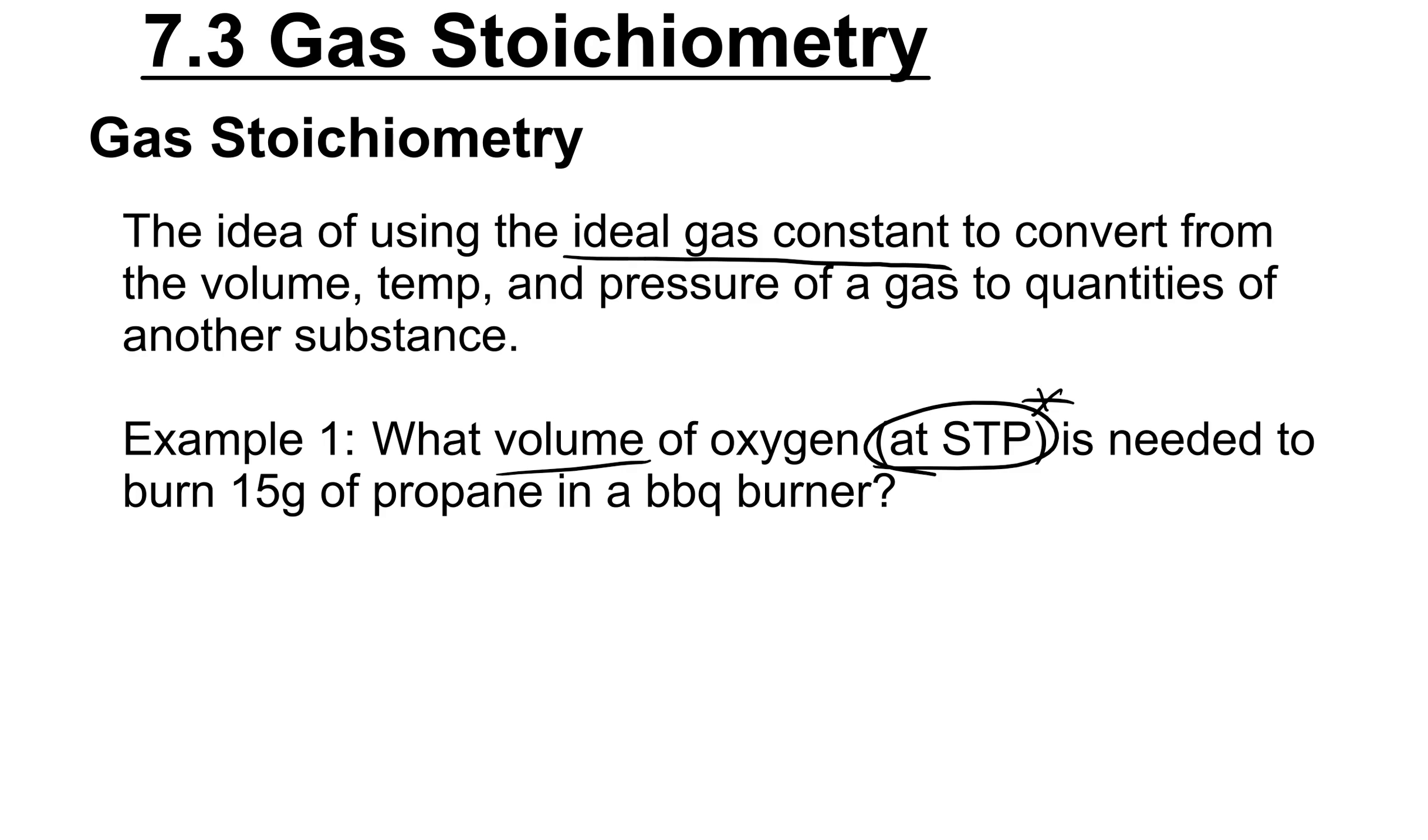Okay, so we've got oxygen reacting with propane. As we always do, we start off with a balanced chemical reaction in stoichiometry. Let's try that out. So we're going to have propane reacting with oxygen, and it's going to produce, well, we're assuming complete hydrocarbon combustion. So it's going to produce carbon dioxide gas and water vapor gas. Let's balance this.